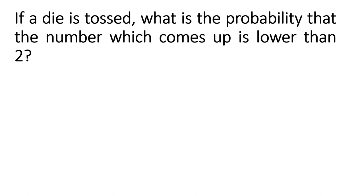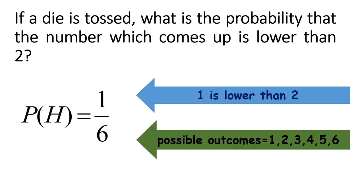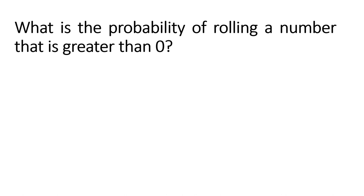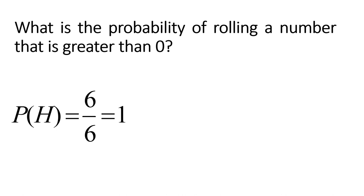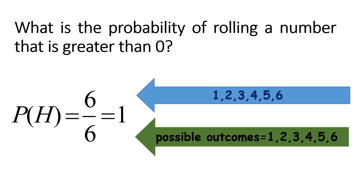If a die is tossed, what's the probability that the number which comes up is lower than 2? Only 1 is lower than 2, so the answer is 1 over 6. What is the probability of rolling a number greater than 0? Since all numbers 1, 2, 3, 4, 5, 6 are greater than 0, the answer is 6 over 6, which equals 1.